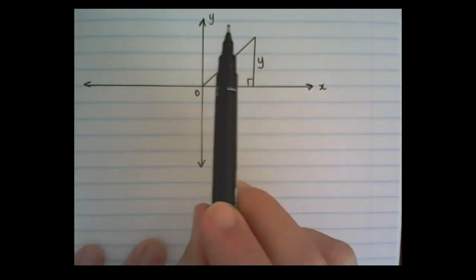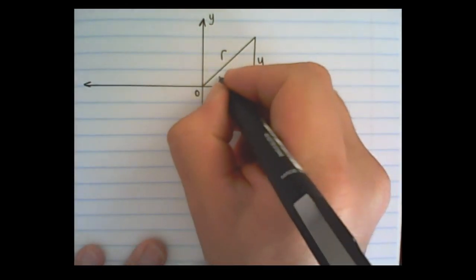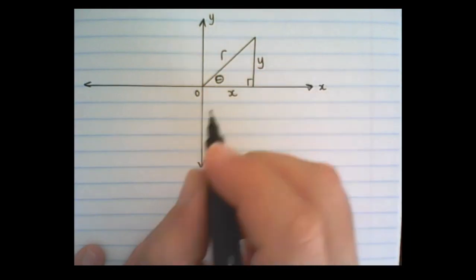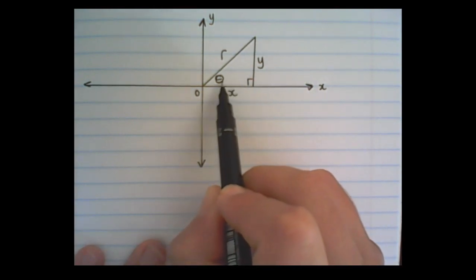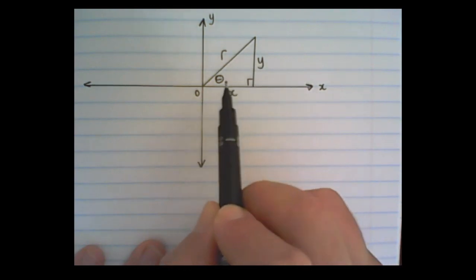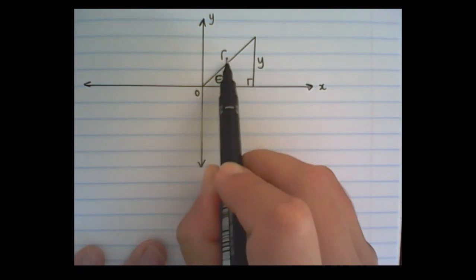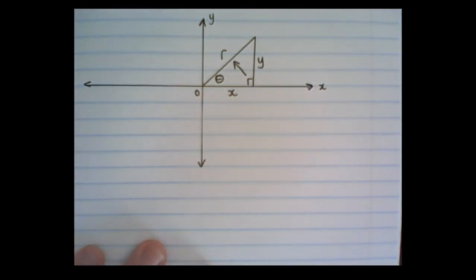Also on a Cartesian plane we can apply the trigonometric definitions. Let's say the angle theta is the angle at the origin. Then x would be adjacent to theta, y would be opposite of theta, and r would be the hypotenuse because it is opposite the right angle of the triangle.